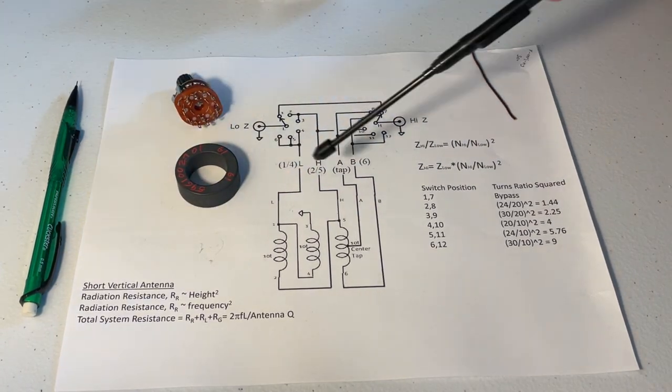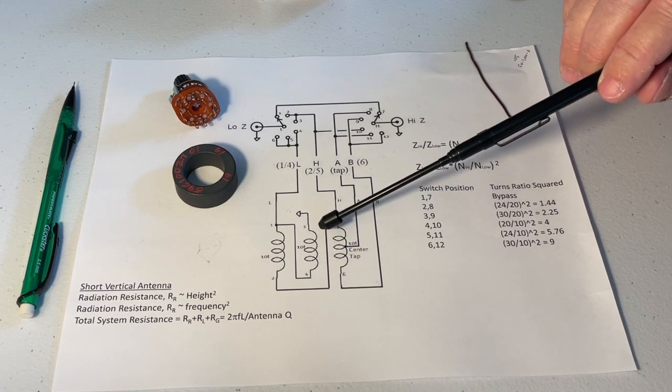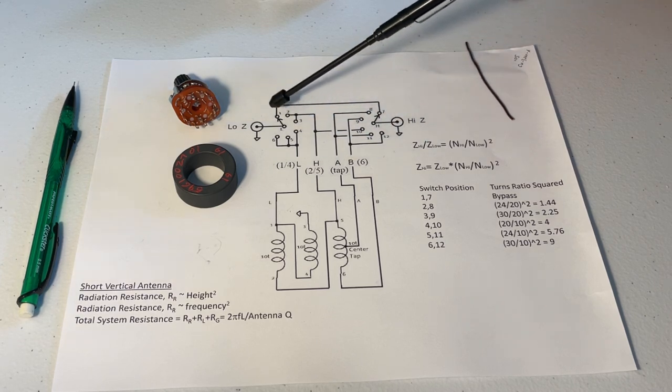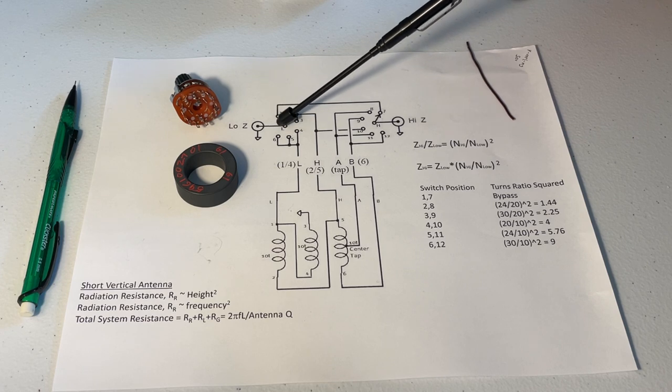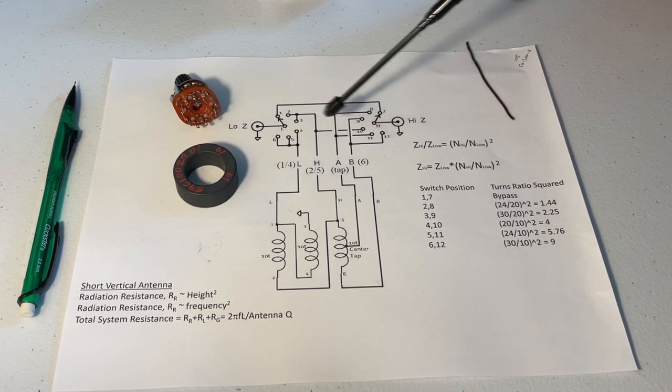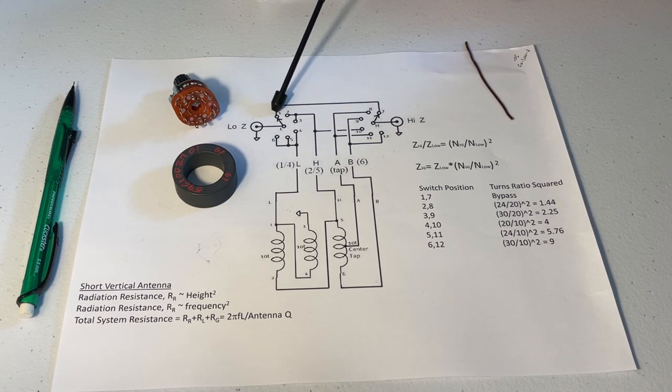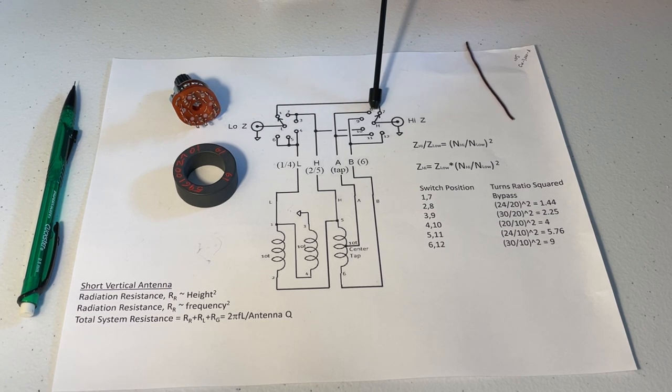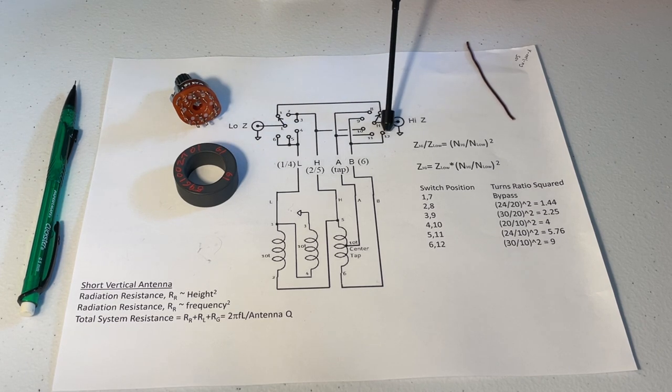But if we look at how this thing works, again it's a 10 turn transformer trifilar wound with a center tap. The taps on the transformer are wired into a two pole six position switch. So this is a two pole switch, basically two switches in one. When you operate the dial you're operating both switches at the same time. So position one on this side would be equivalent to position seven on this side. Two on this side is eight over here, three is nine, on down to six is twelve on this side.